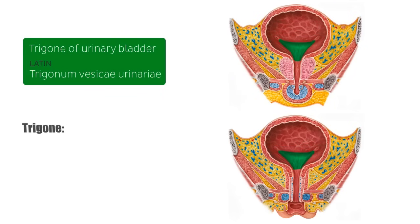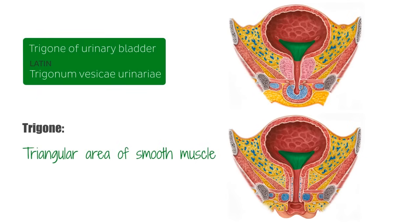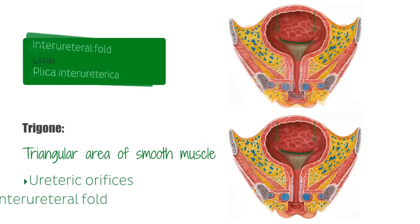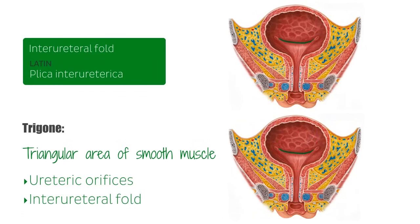The trigone of the bladder is found on the internal surface of the fundus. It's an upside-down triangular area of smooth muscle with its superolateral angles formed by the ureteric orifices — the openings of the two ureters into the bladder. Between them lies a membranous fold called the interureteral fold, also known as Mercier's bar, the interureteric fold, or the interureteric crest.